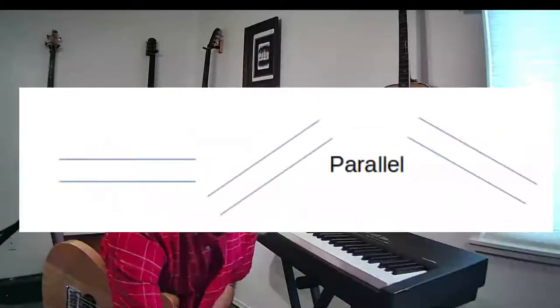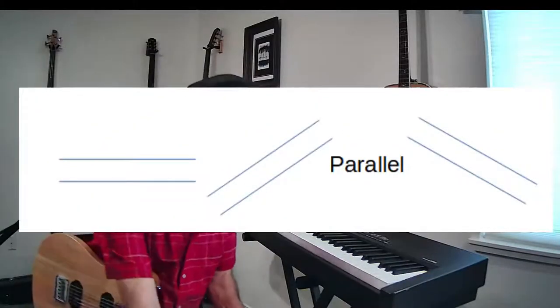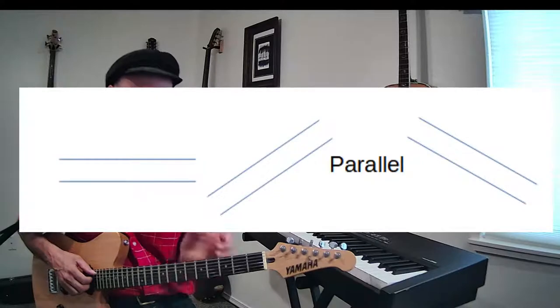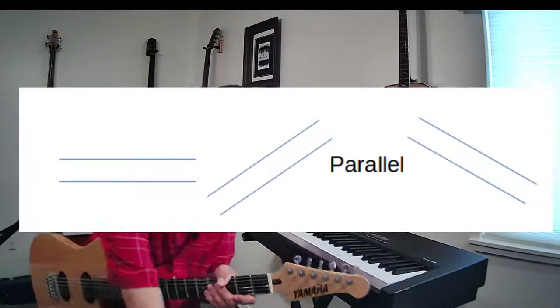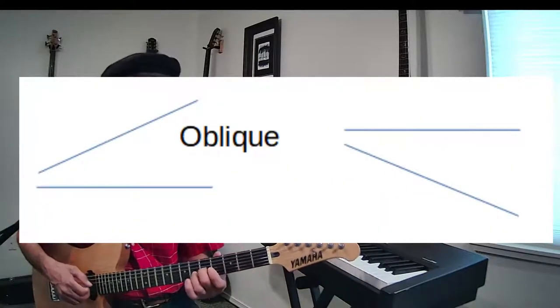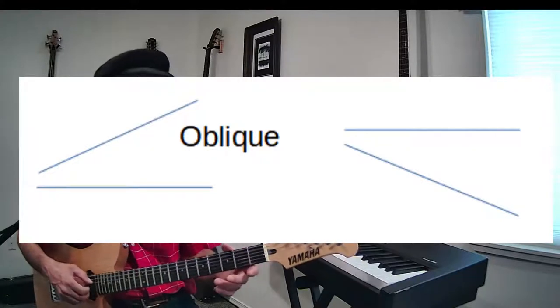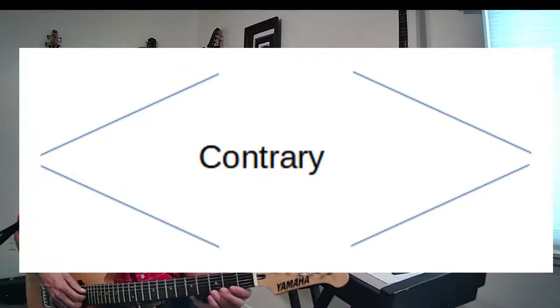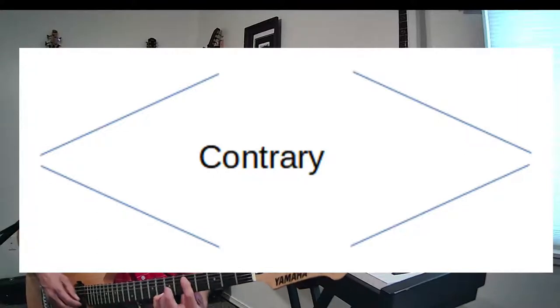That's the three different kinds of motion I have to show you today. Parallel motion — where notes always move together in the same direction, not always exactly the same amount but at least the same direction. Oblique motion — when one note is staying the same. And contrary motion — when you have notes moving in different directions.